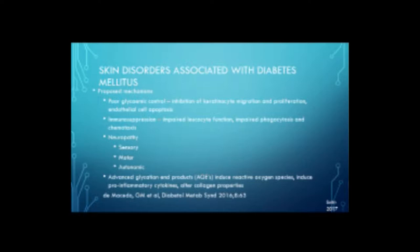Neuropathy — which was spoken about before — can be sensory, motor, and autonomic. And of course there's glycation: advanced glycation end products are produced which induce reactive oxygen species, pro-inflammatory cytokines, and alter the collagen properties.